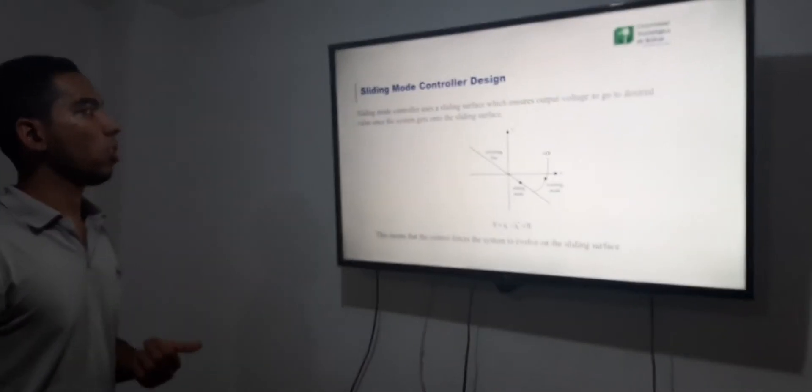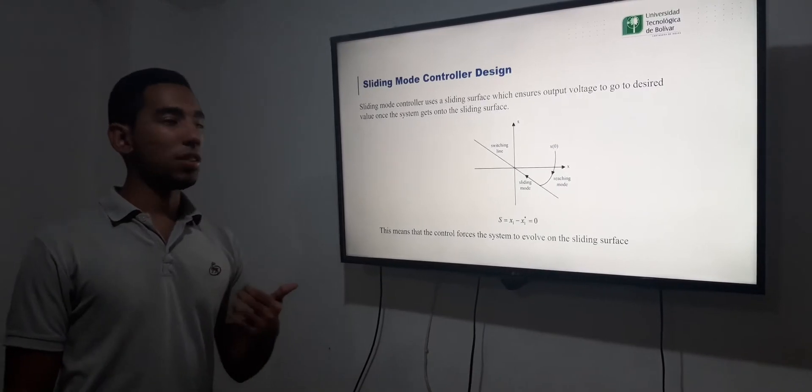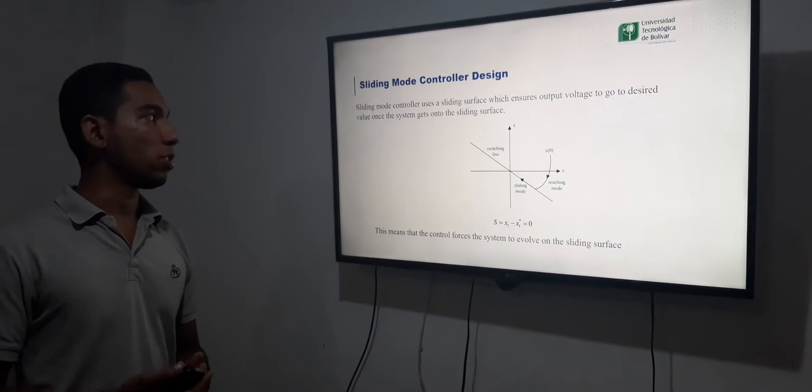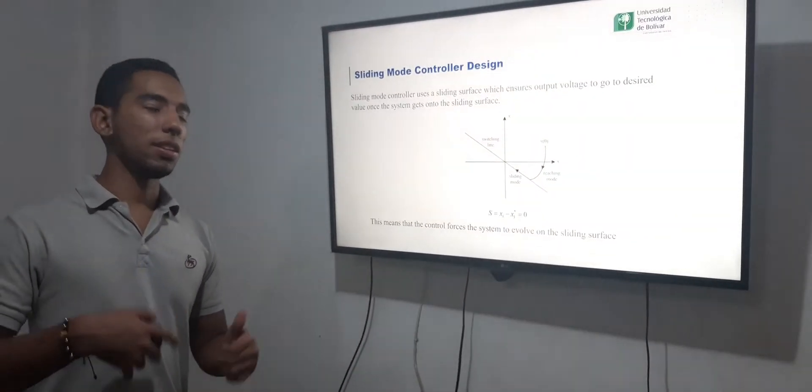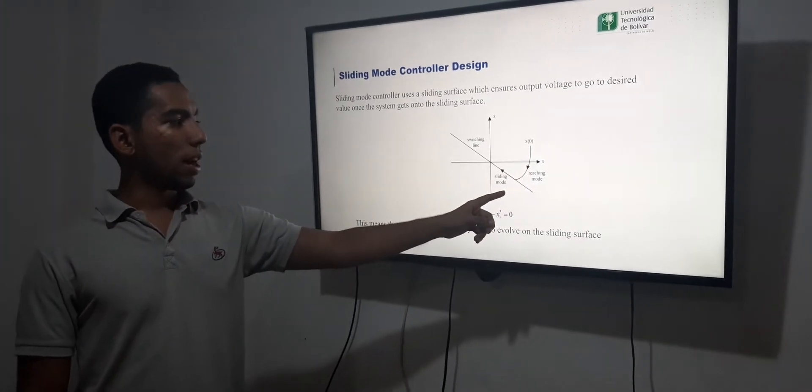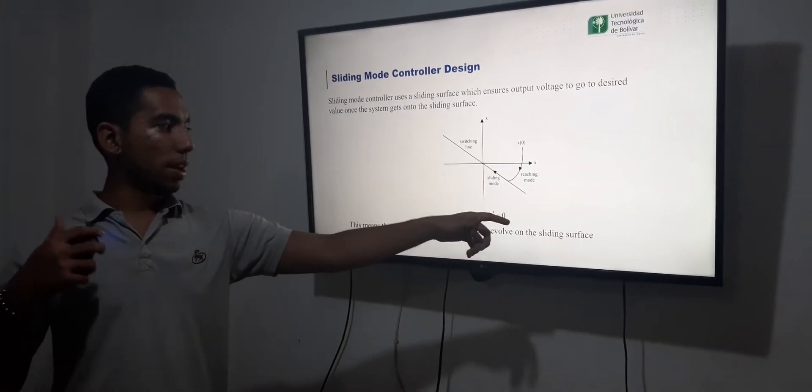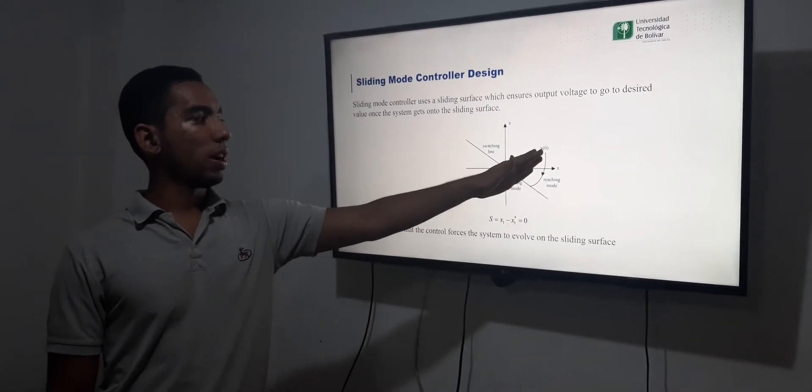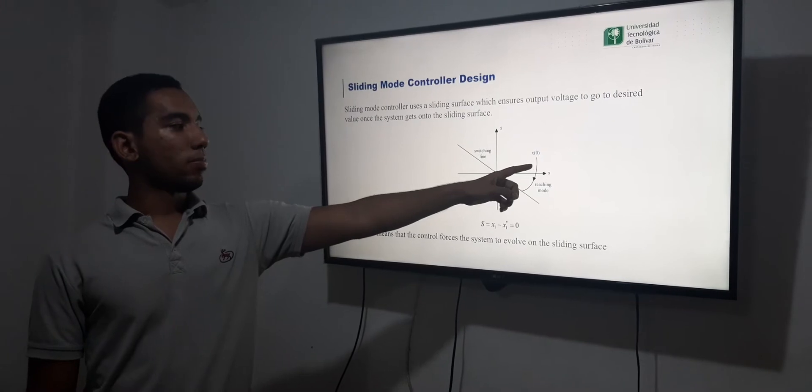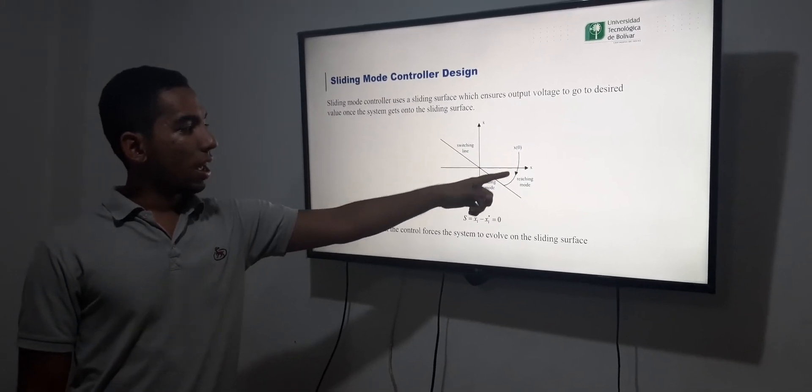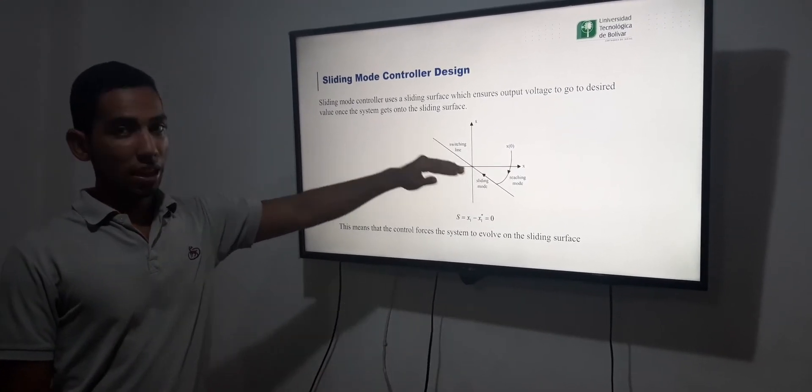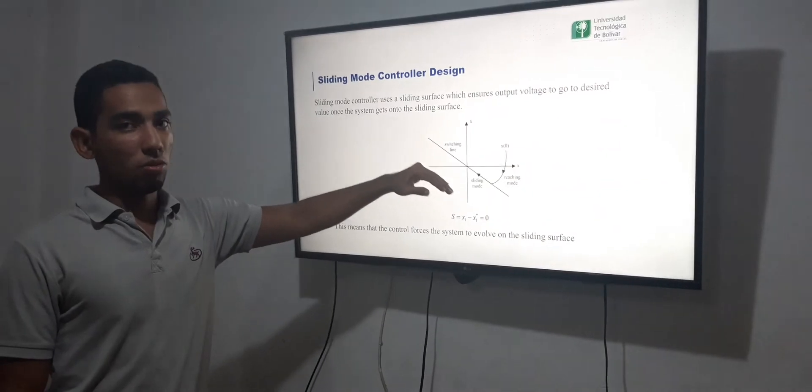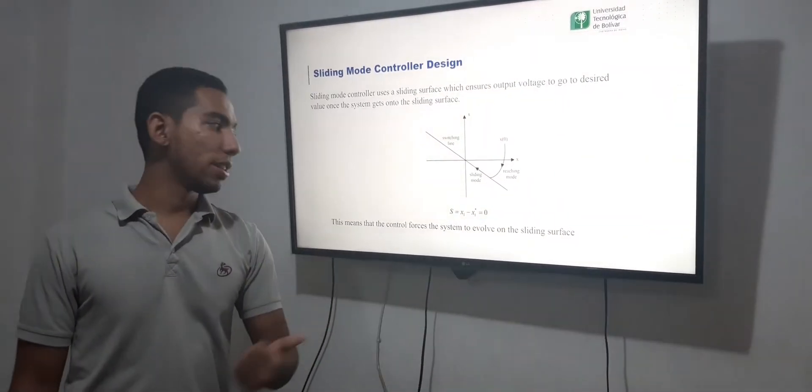The sliding mode controls use a sliding surface which ensures output voltage to go to the desired value once the system gets into the sliding surface. Here we have the reaching mode that I talked in the past slide and the sliding mode. Here is when the converter starts from an initial point and gets to the switching line. And the sliding mode forces the system to never leave and gets to the desired value.